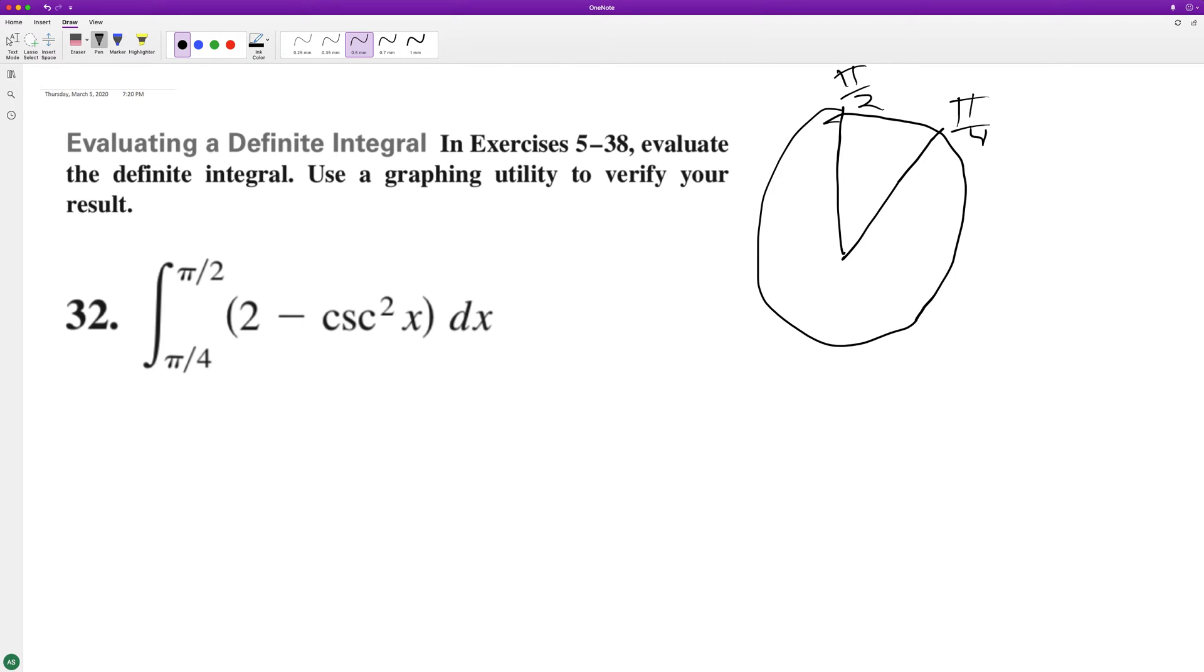Okay, so the integral is gonna be two x minus, and the integral of cosecant squared x is negative cotangent x, so it becomes plus cotangent x.